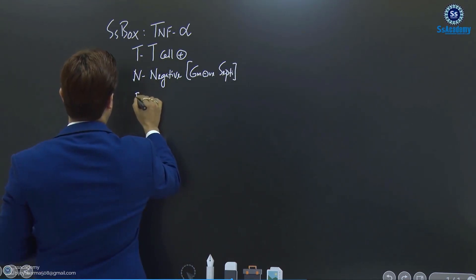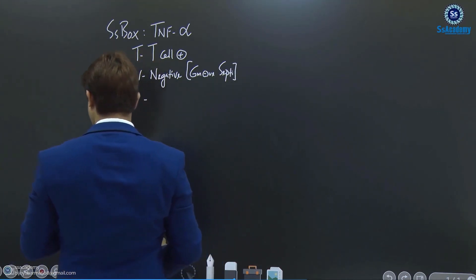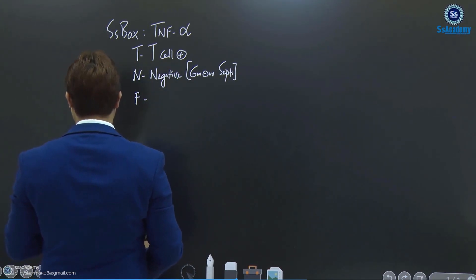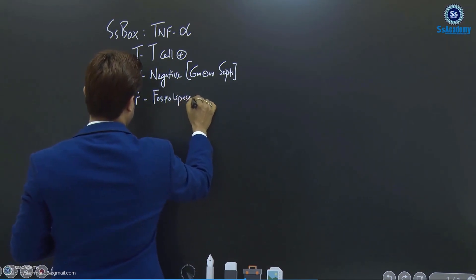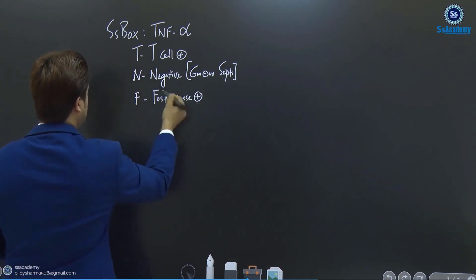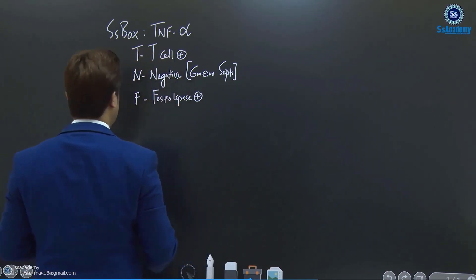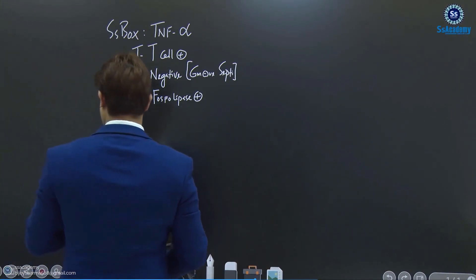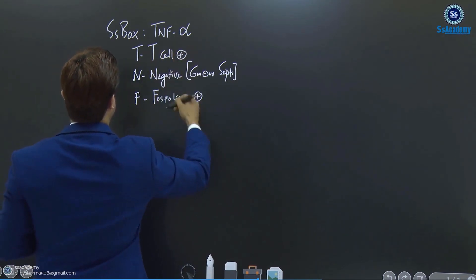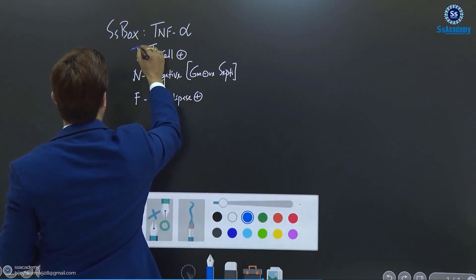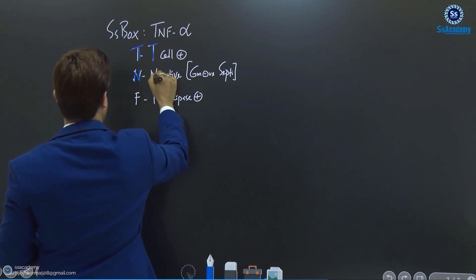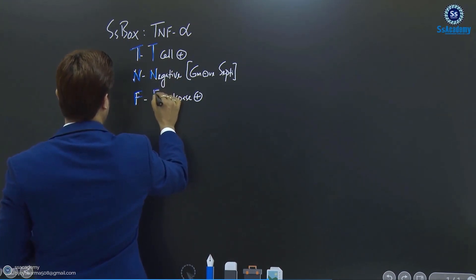F for phospholipase — writing F instead of 'ph' so you remember — which represents the anti-tumor effects. It also has interleukin-1 similar activities. Remember: TNF-alpha: T for T cell activation, N for gram-negative septicemia, and F for phospholipase activation.